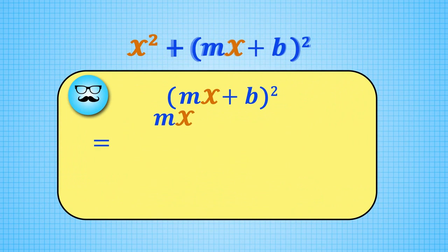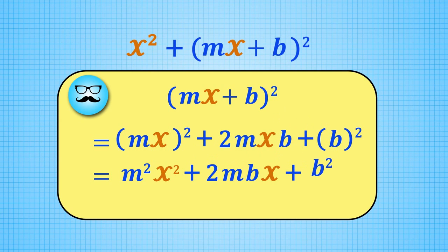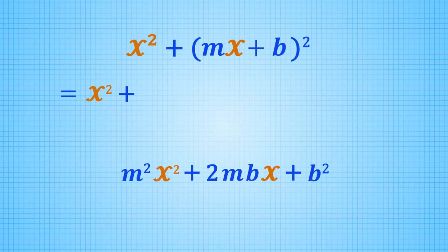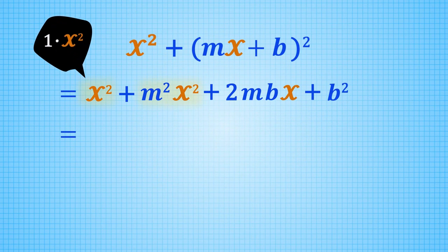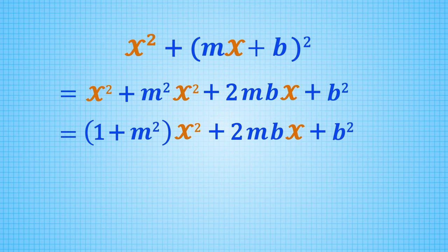Expanding mx plus b squared and then grouping, we can rewrite the expression we are trying to minimize as 1 plus m squared times x squared plus 2mbx plus b squared.